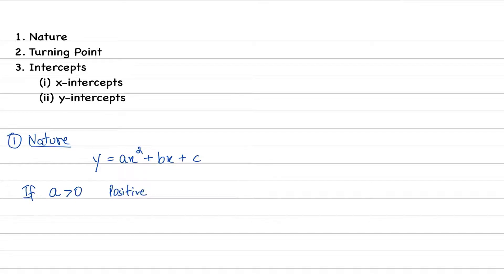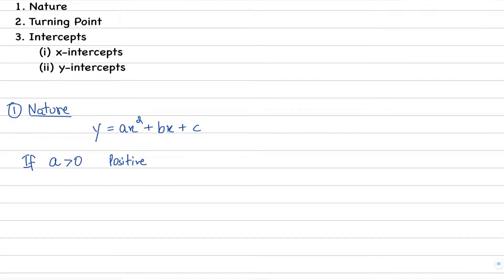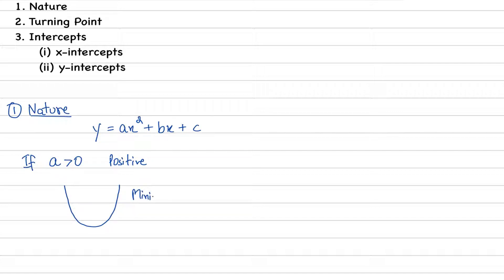If a is positive, what will happen? In that case you are going to get a minimum curve, or you can say you are going to get a happy face. So it is very easy to remember: positive means happy, positive means minimum. We can remember it from the happy face.